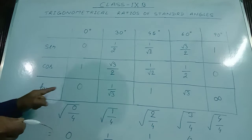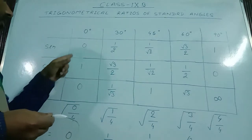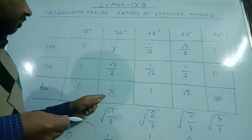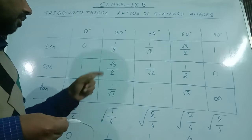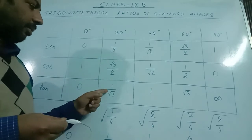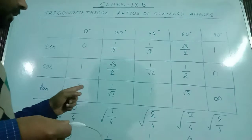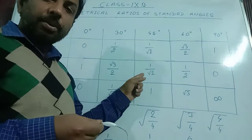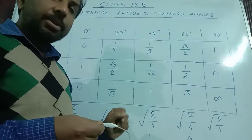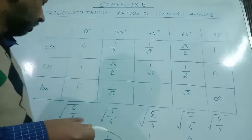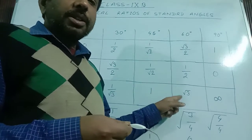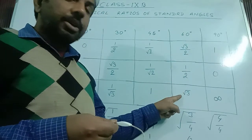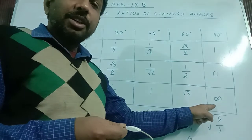For tangent: tan 0° = sin 0°/cos 0° = 0/1 = 0. Tan 30° = sin 30°/cos 30° = (1/2)/(√3/2) = 1/√3. Tan 45° = sin 45°/cos 45° = (1/√2)/(1/√2) = 1. Tan 60° = sin 60°/cos 60° = (√3/2)/(1/2) = √3. And tan 90° is not defined.